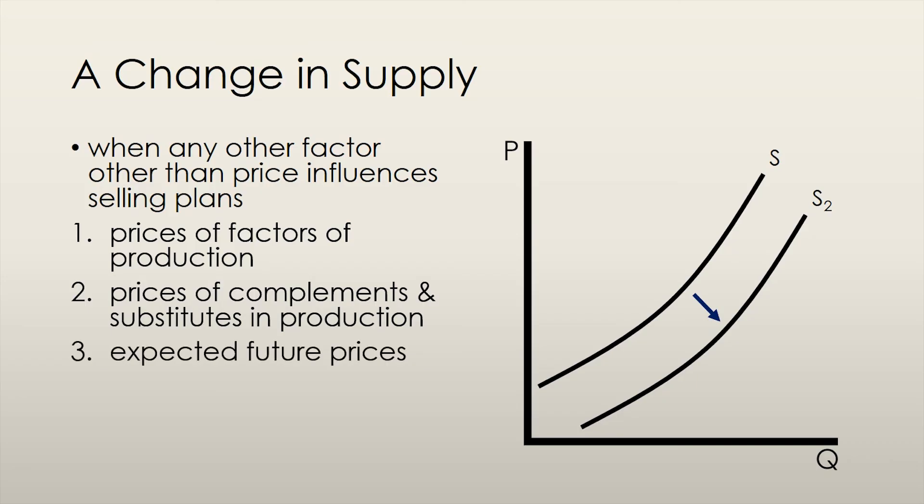Expected future prices should be pretty intuitive. If I, as a firm, expect to earn more in the future from selling a good, then I would hold off on selling right now and sell my goods in the future instead at higher prices. Thus, today the supply of the good would decrease.